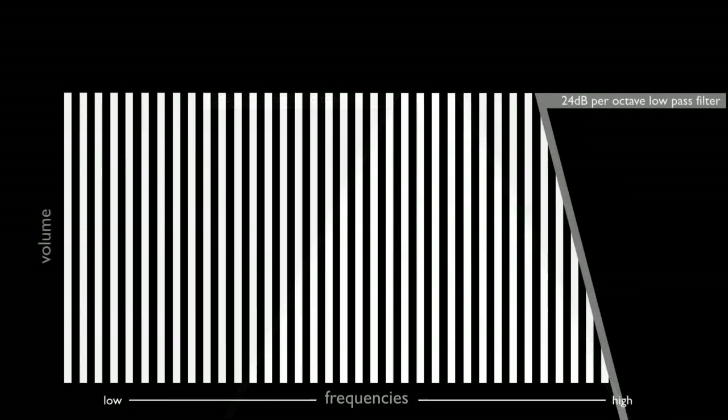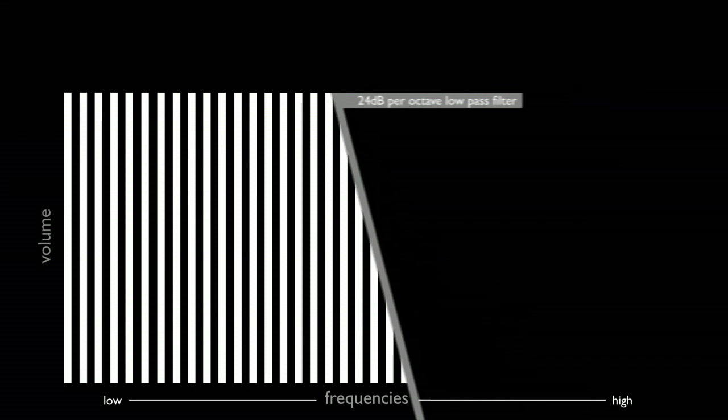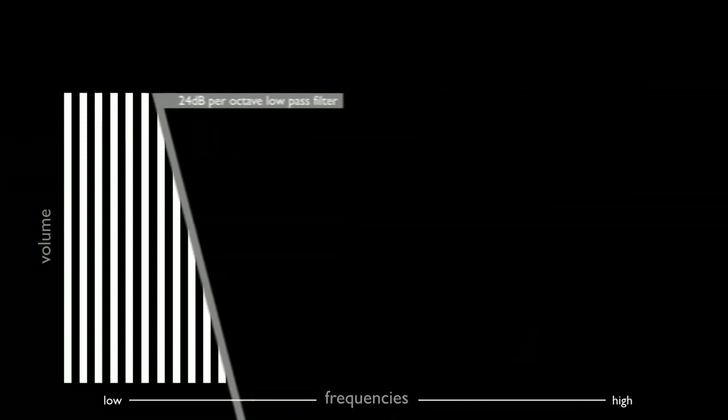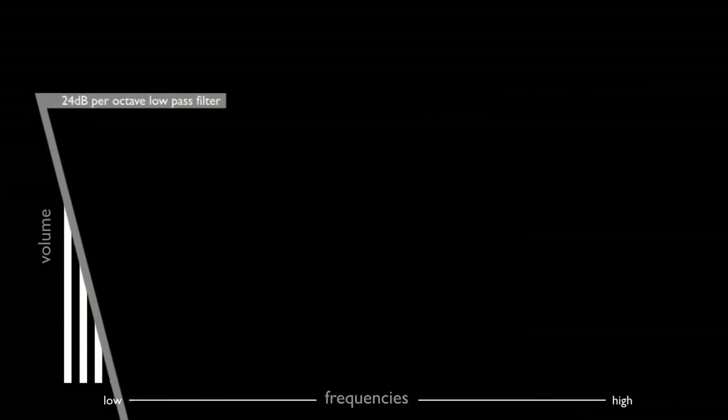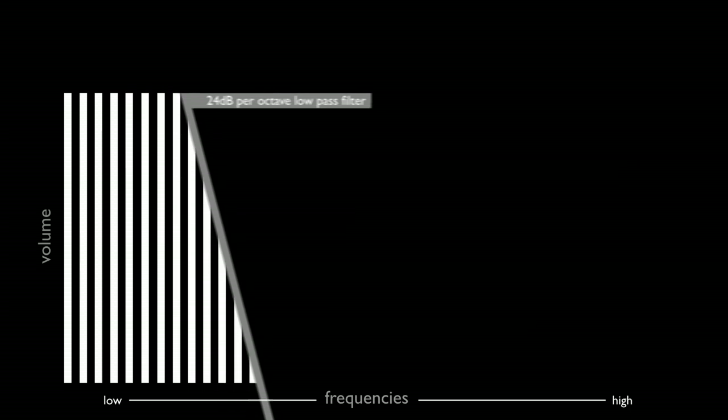The degree to which the harmonics in the region of the cutoff point are removed is called the slope. It is visually demonstrated by the angled bar in the graphic. 24 decibels per octave means there's a 24 decibel drop in volume for every octave of frequencies attenuated by the filter.